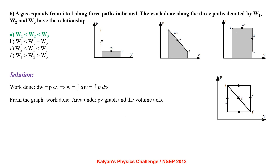A gas expands from I to F along three paths indicated. The work done along the three paths denoted by W1, W2 and W3: work done dW equals p dV, that is the area under the PV graph in thermodynamics. From the three diagrams we can easily conclude that W1 < W2 < W3.